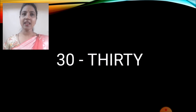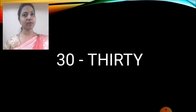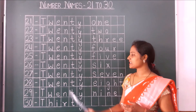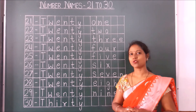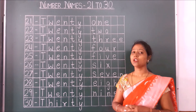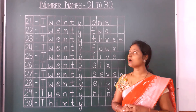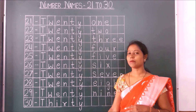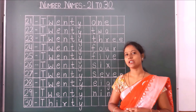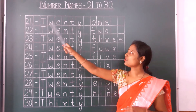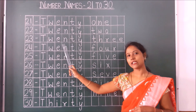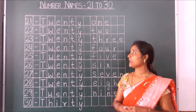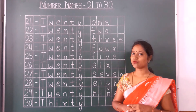Now we will revise again and see how to write these number names in your copy. As you can see, I have written number names here. In this way you have to write in your square line copy. One thing to remember: when you write these number names, you have to leave one line and write. Write 21, then leave one line. Write 22, then leave one line. Now we will revise once again.